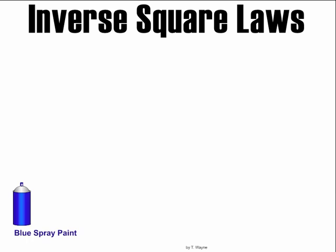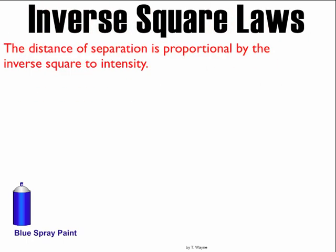Let's do an example with spray paint, because spray paint also follows the inverse square law. The inverse square law says the distance of separation is proportional by the inverse square to the intensity. Let's see what that really means.